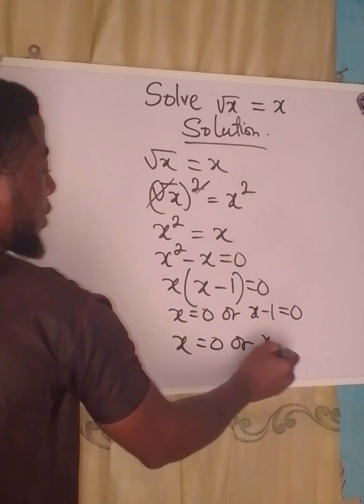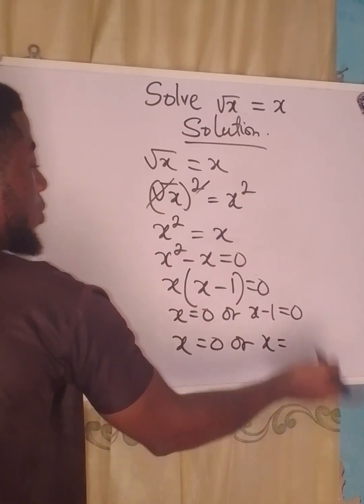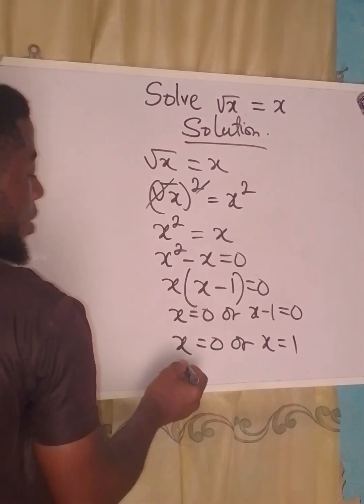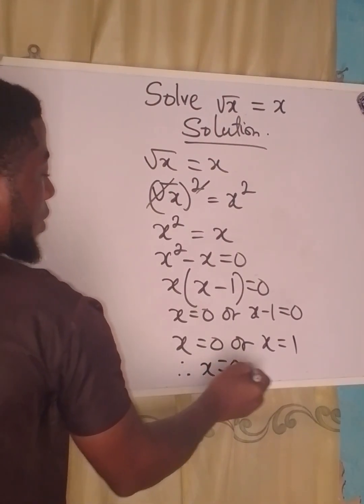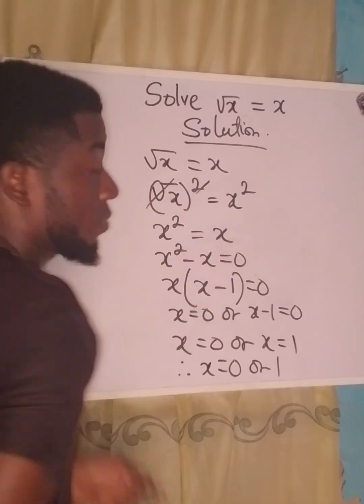So our x here remains zero or x equals zero plus one, and that is one. Therefore x is equal to zero or one.